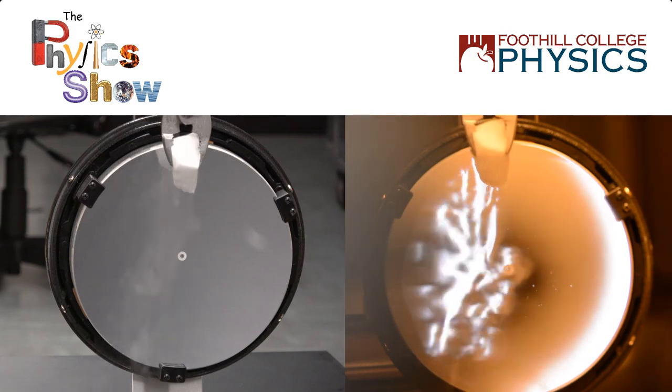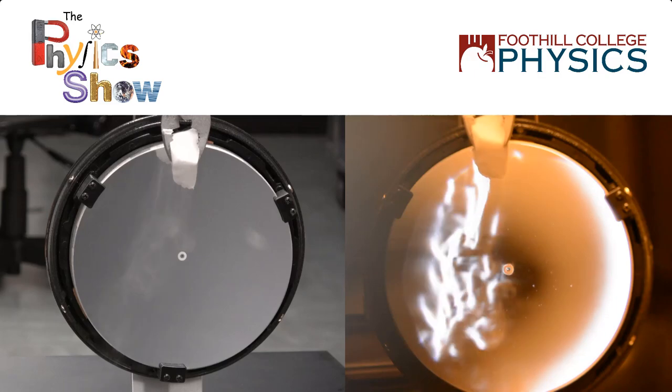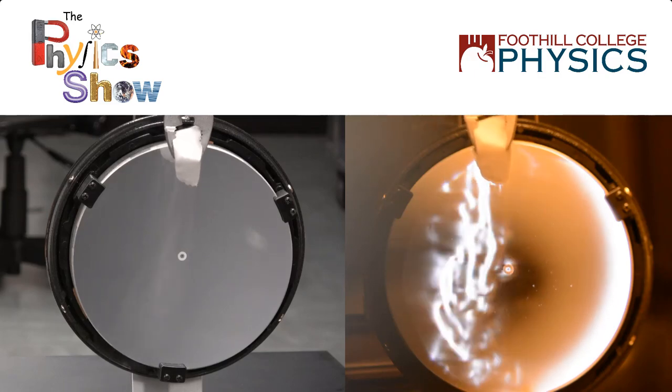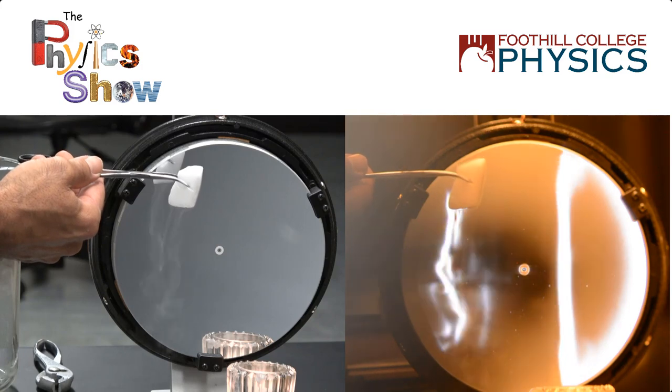So hot air rises and cold air sinks. Cold air goes down in room temperature air. And this is a piece of dry ice. And you can see it cooling the air around it and the air flows down.